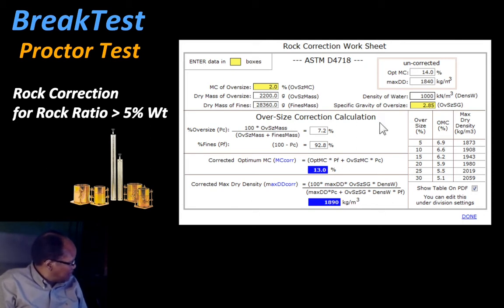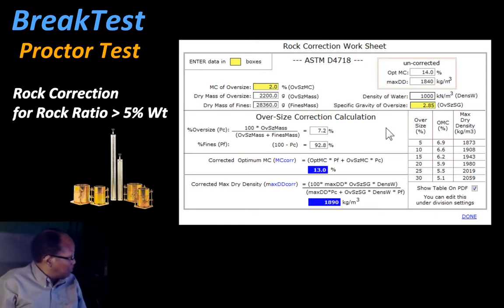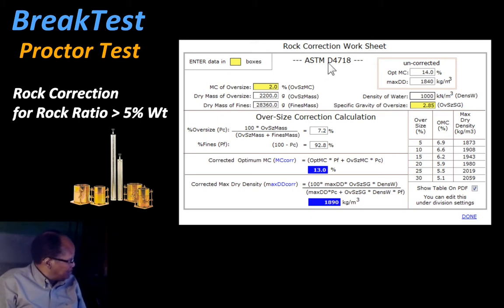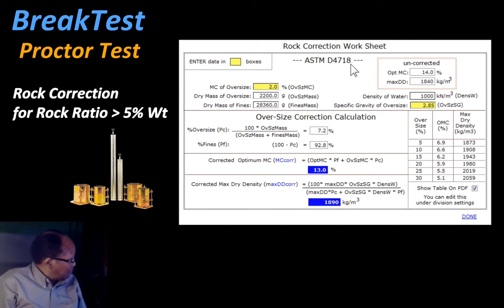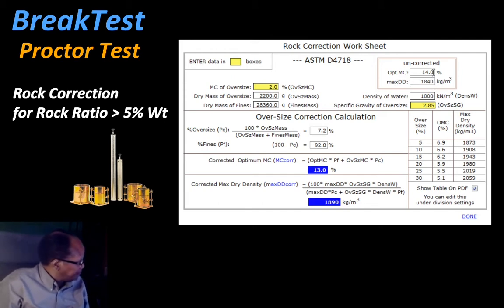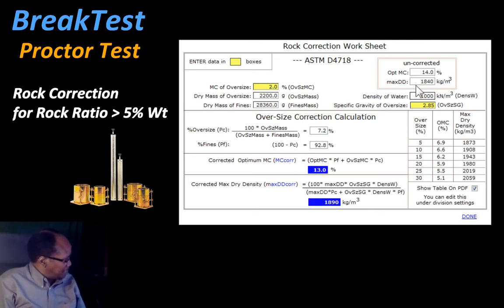Once the proctor test detects that the rock ratio is 5% or more, it will launch this rock correction worksheet tool and follow the ASTM D4718 procedure to perform the rock correction. The optimum moisture content for the uncorrected sample is 14% and the maximum dry density is 1840.